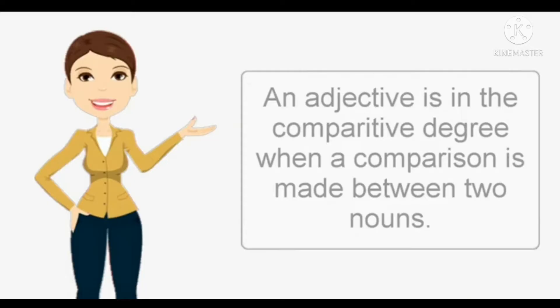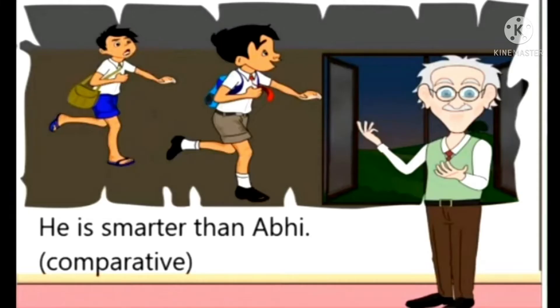An adjective is in the comparative degree when a comparison is made between two nouns. Let us see the example: he is smarter than Abhi. Here two boys are there, so a comparison is made between two boys — he is smarter than Abhi.